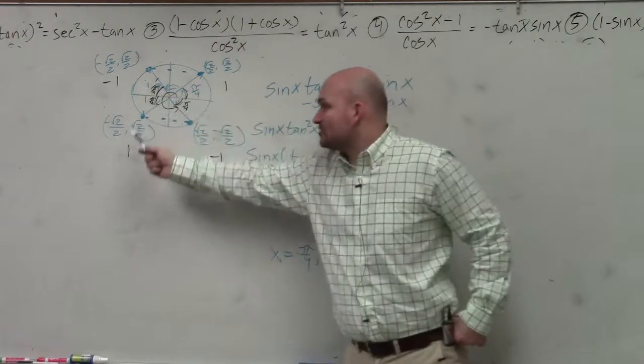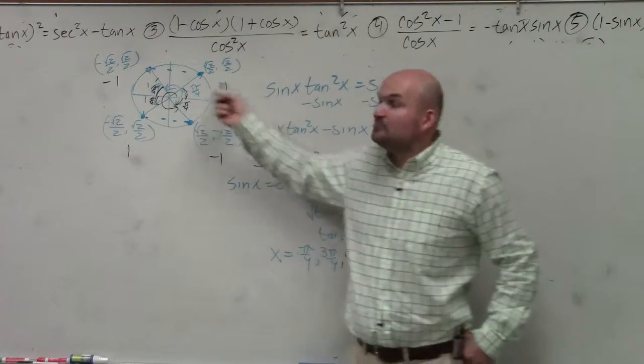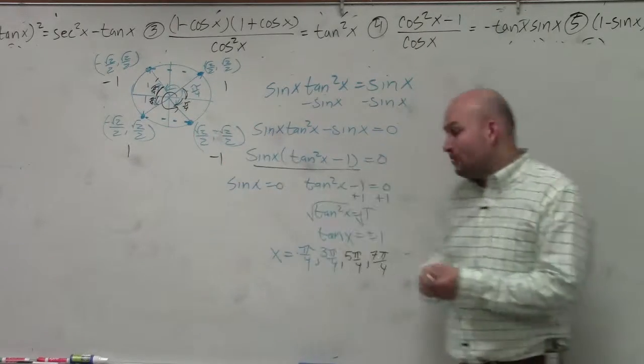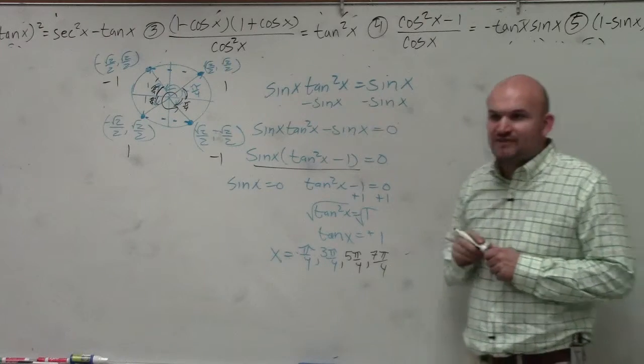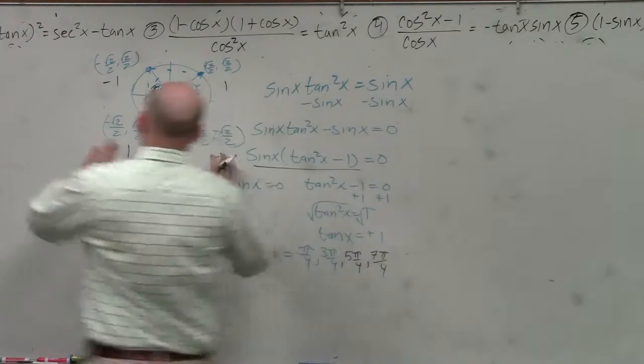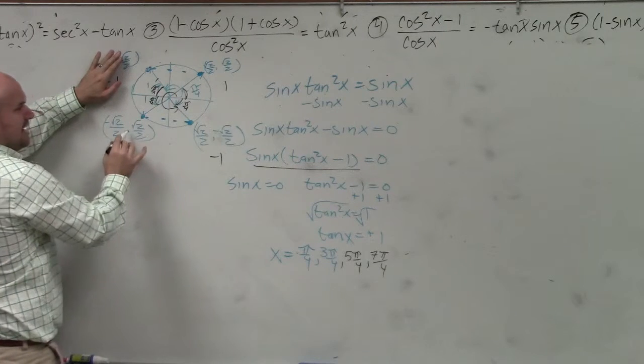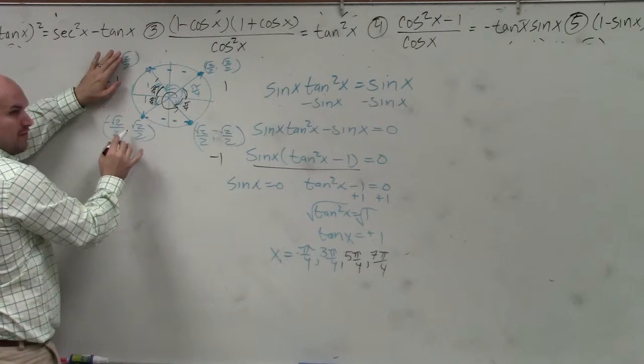Well, all of these angles, when I do the tangent, produce plus or minus 1. That's why I include them all. If my equation was only when is the tangent of x equal to 1, then I would include pi over 4 and 5 pi over 4. Does that make sense?